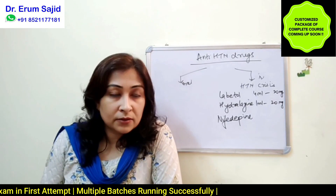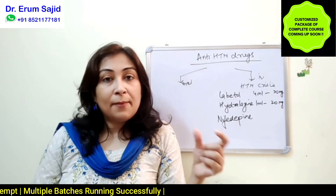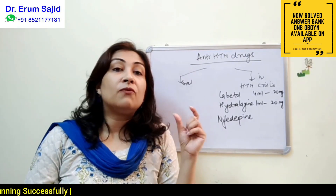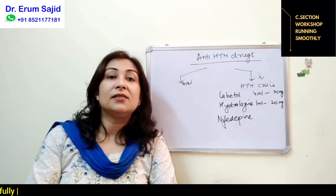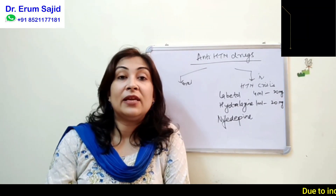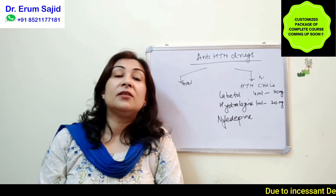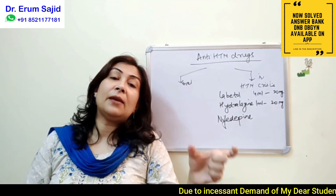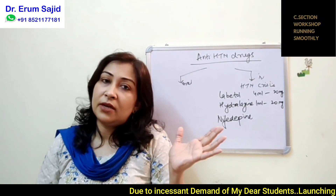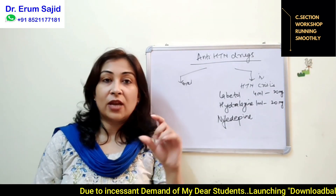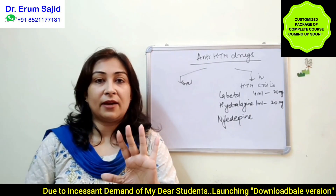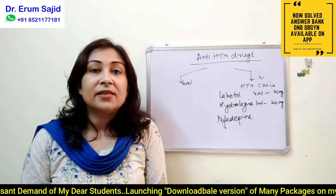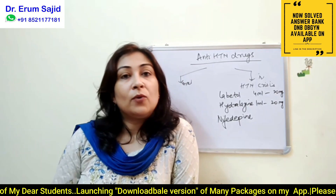For emergency use, dilute 1 ml with 3 ml normal saline to make a 4 ml solution containing 20 mg. Giving 1 ml of this solution delivers 5 milligrams, which is the starting dose — 5 mg slow IV. It can be repeated in 20 to 40 minutes; an ideal interval is about 30 minutes. The dose is not escalated; the same dose is simply repeated as needed.